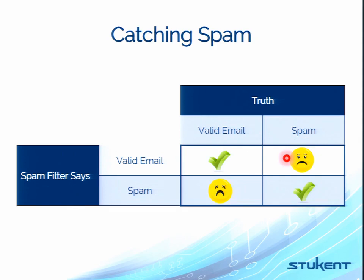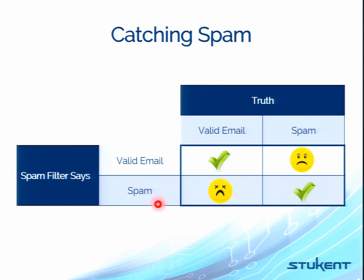Now, catching spam. Some spam filters have really stringent rules that will mark valid email as spam — that's the false positive problem. You want to make sure your spam filtering isn't too restrictive, because it'll falsely flag something as being positively spammy. If you're sending a valid email and it's already marked as spam, it's going to go right to their junk mail folder.